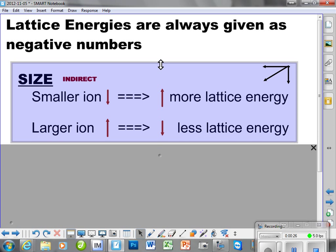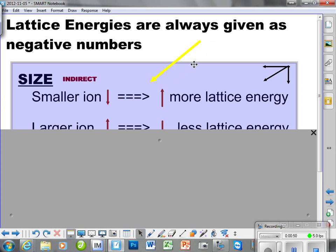It's important to understand, and you should stop the recording right now and copy this little summary chart. The indirect relationship is indicated by the arrows. An up arrow means more lattice energy and a down arrow means less lattice energy. This down arrow here is saying smaller ion, this arrow here is indicating more lattice energy.